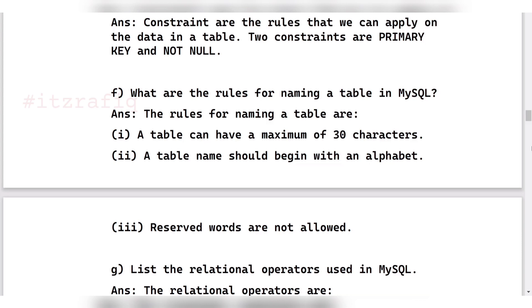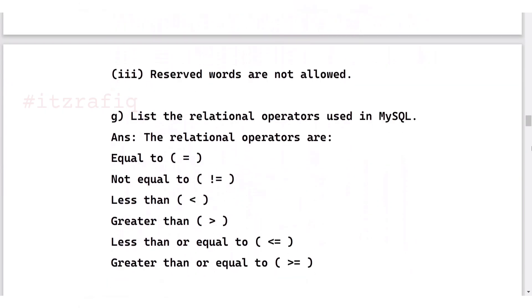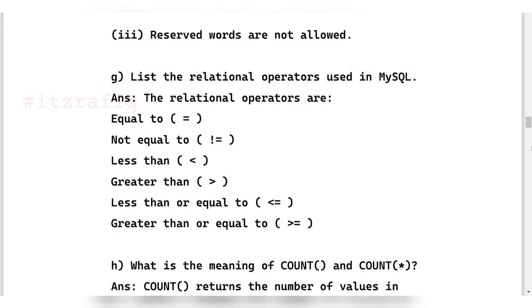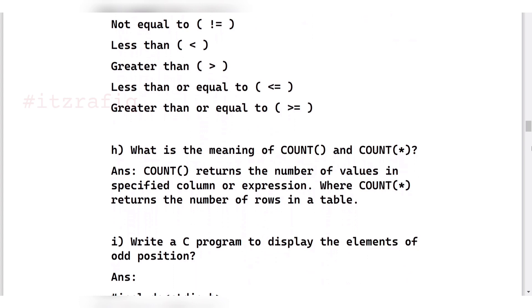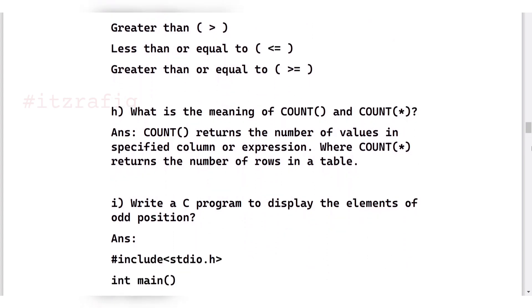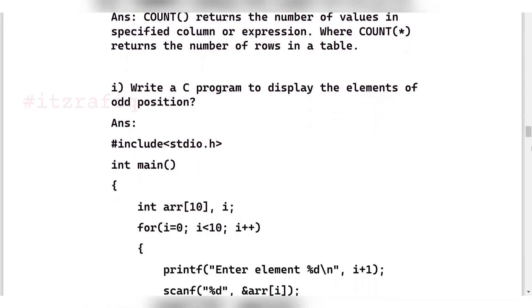Then list the relational operators. There you can write all these: greater than, less than, greater than equal to, less than equal to. This total six operators are there. Equal to, you will have to give one more equal sign - I forgot to give that. What is the meaning of count and count star? Count means it counts the number of values in a specific column or expression. There should be value. If there is no value, then it will not count. And count star will count the number of rows in a table, whether there is value or not. It does not matter, it will just count the number of rows.